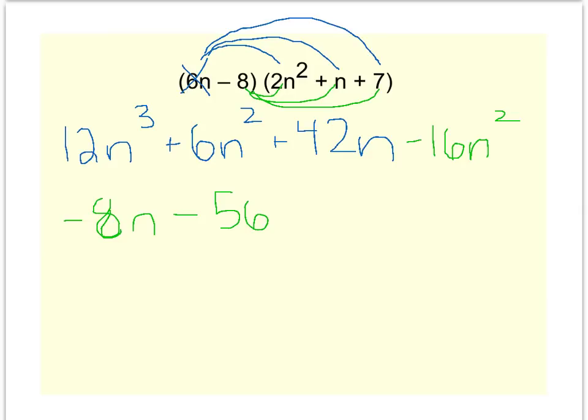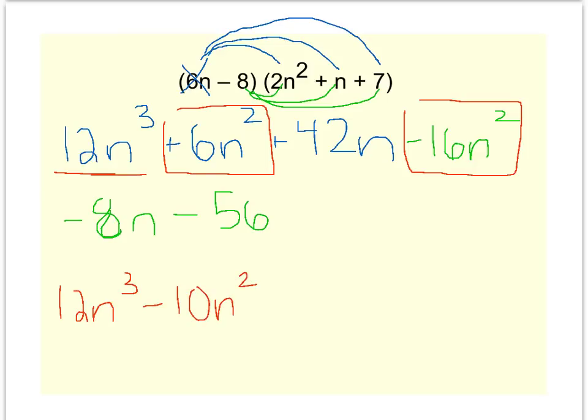Now let's combine like terms. I'm going to be really careful because I have two rows worth of work. But I notice that the 12n³ is my only term with an exponent of 3. So I'll write that down. Then I have a positive 6n² and a -16n², which combine to a -10n². Plus 42n minus 8n will give me a positive 36n. And then to finish, I've got a constant of -56.